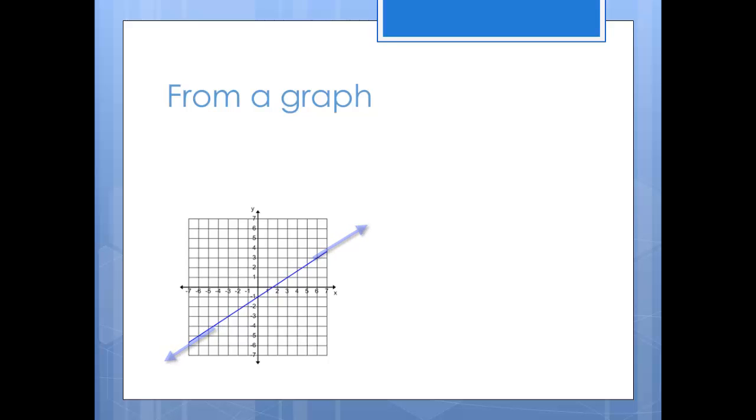For the domain, look along the x-axis. Each point on the x-axis matches up with a point on the line. That means that the domain is equal to all real numbers. In interval notation, we write this as the interval negative infinity to infinity.